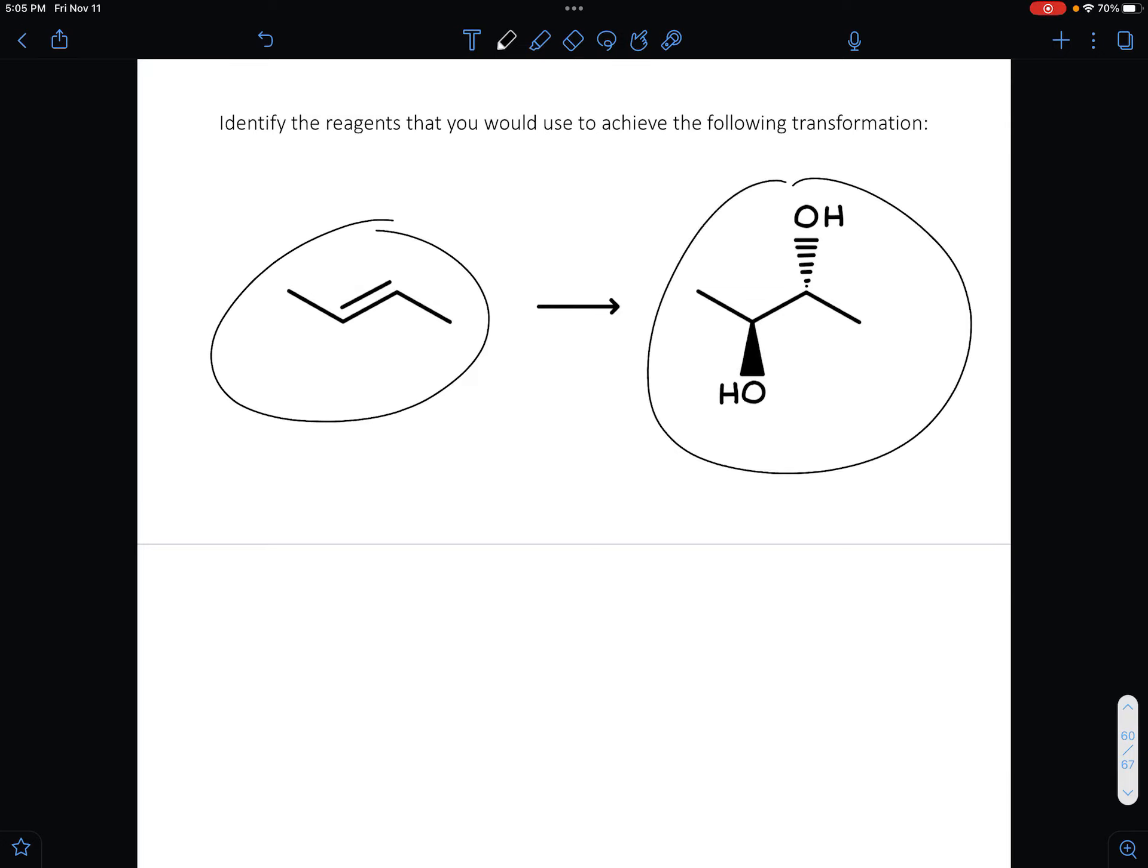In this question, they give you the reagent and they give you the product they want you to turn it into, and the question is, what do you need to react the starting material with in order to get that product?